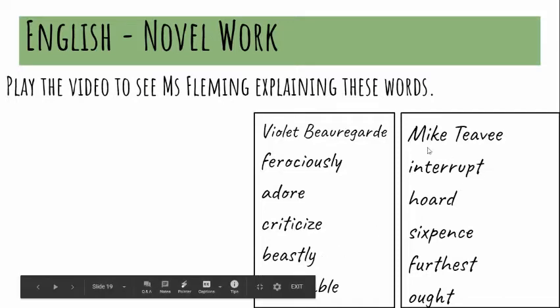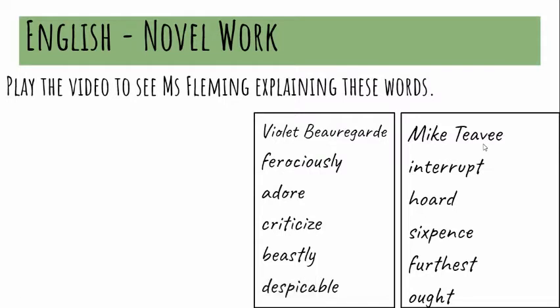Moving on to the next box — the first one is Mike TV, the fourth main character we're going to be introduced to. So we've had Violet Beauregard, Augustus Gloop, and Veruca Salt, and now we have Mike TV. The next word is 'interrupt' — we know what interrupt means, but I just wanted to write it down so that you can see it, because some of us may not have ever seen it written down before.